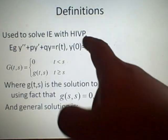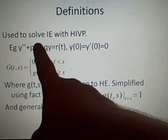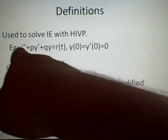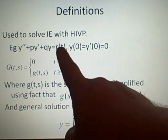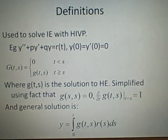So as I've just said, this is an example equation such as here: y double dash plus py dash plus qy equals r(t), where p and q are also functions of t. And this is a second order one. And we have initial values y(0) equals y dash of 0, which equals 0.